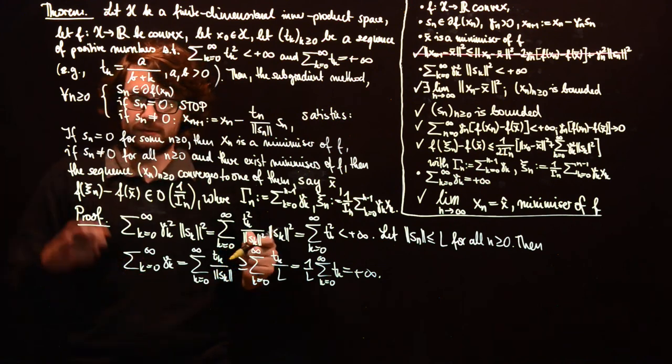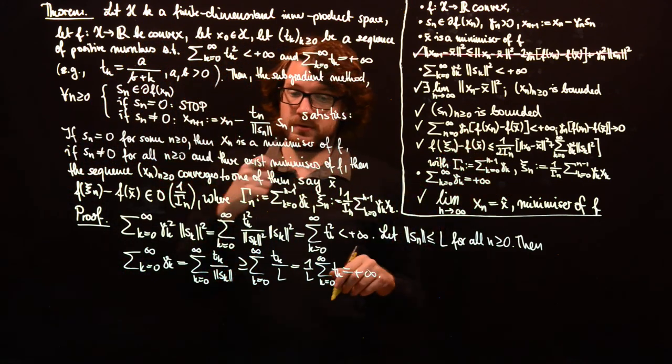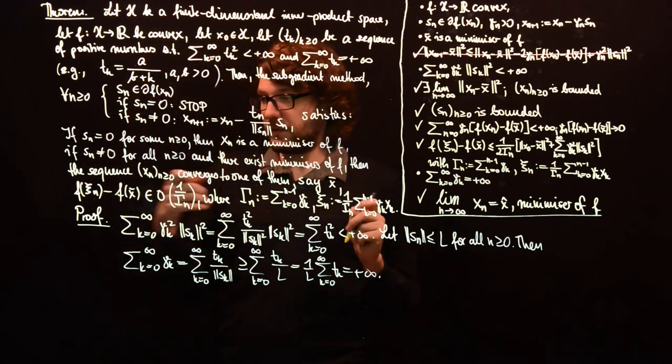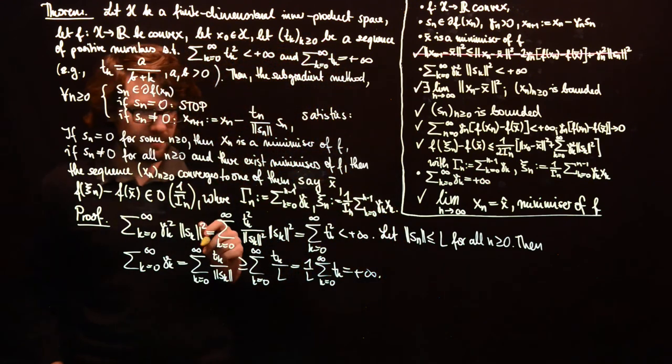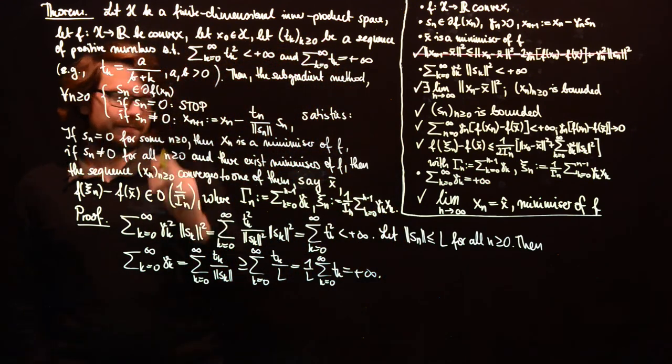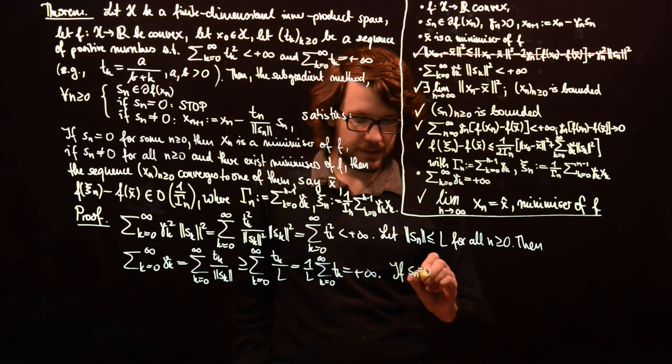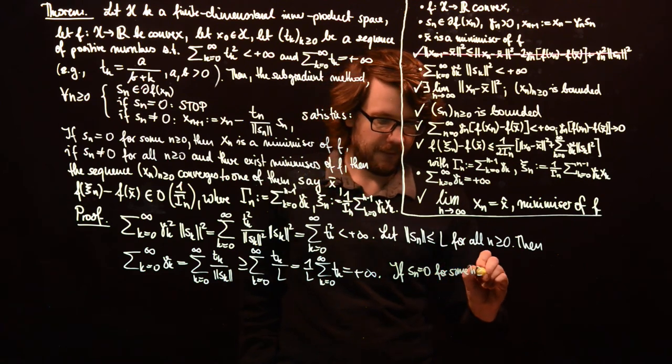And therefore, at least the second part is true. So whenever we have an infinite sequence, then it converges to a minimizer of f. If we stop, then we cannot really talk about convergence. But we know then that x_n is a minimizer of f.